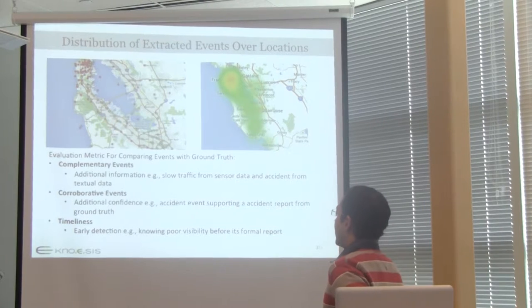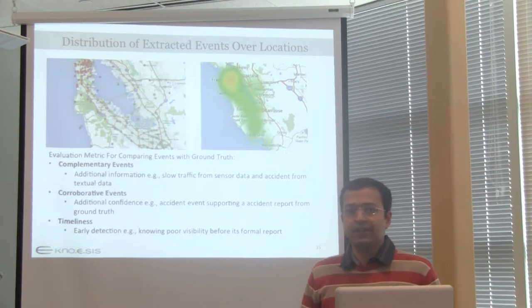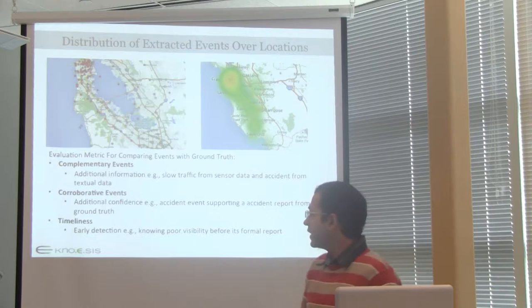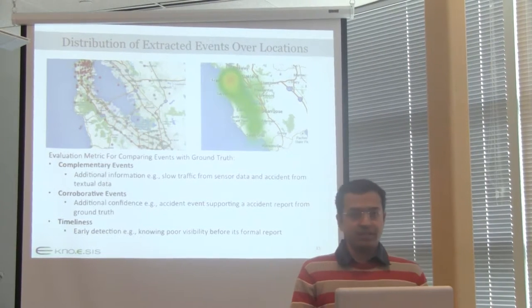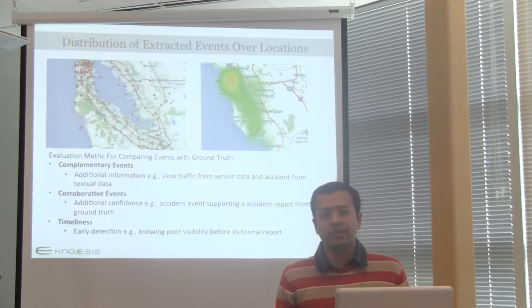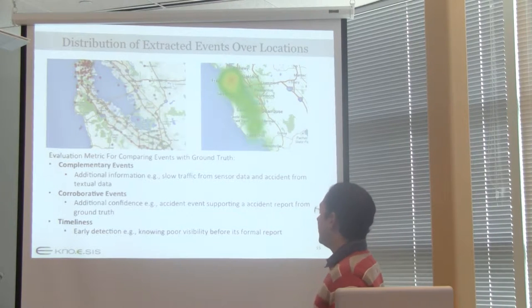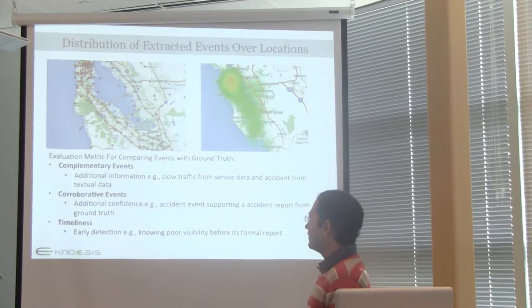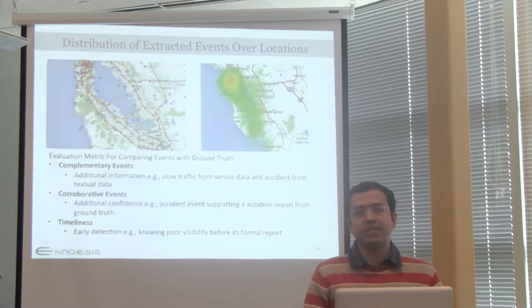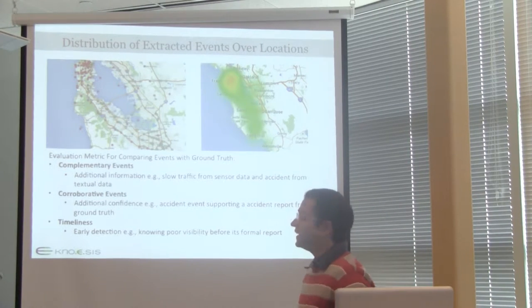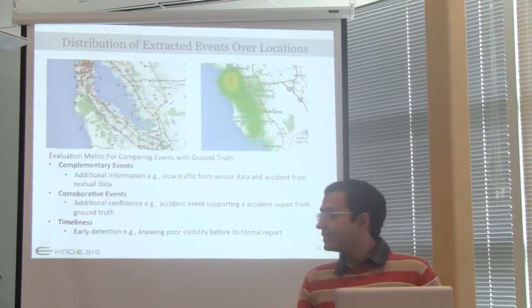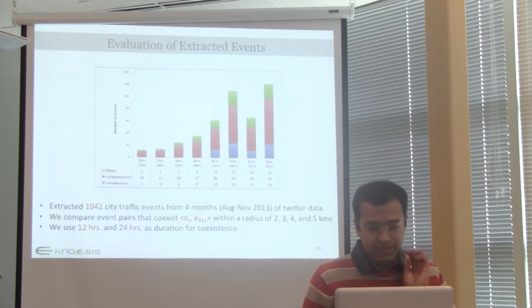We did three kinds of evaluations on the extracted dataset. First, complementariness: did the events extracted from Twitter complement something already known through formal sources? Second, corroboration: is the extracted event supporting something already known? Third, early detection: did we extract something from Twitter well before a formal source could report it? We performed all three analyses on the events extracted.